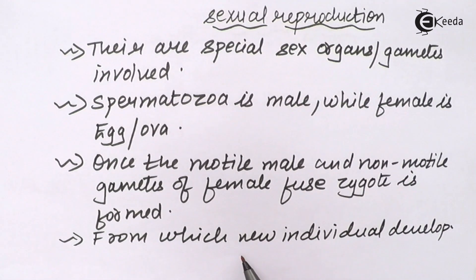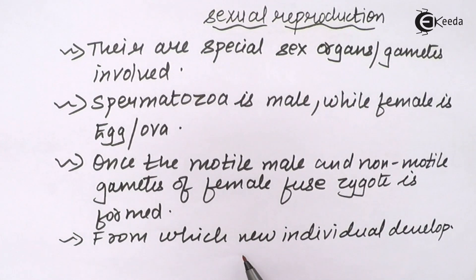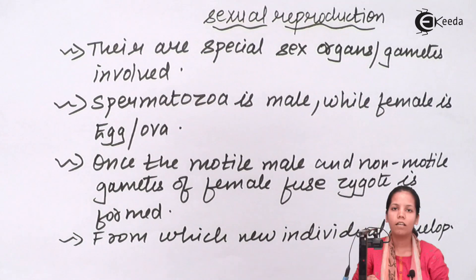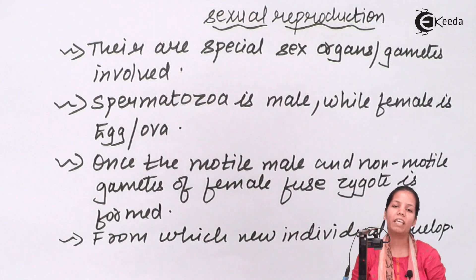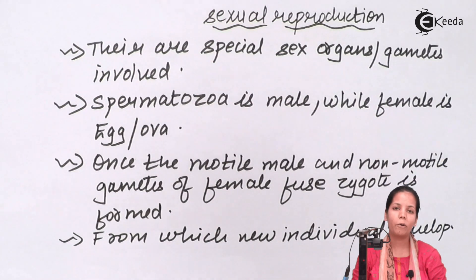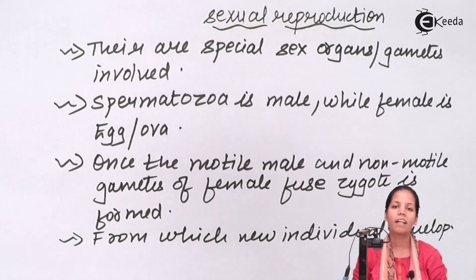During sexual reproduction, a new child or progeny is born with characteristics of both parents. In this part of the chapter we covered sexual reproduction, and I hope you are all very clear with this concept.